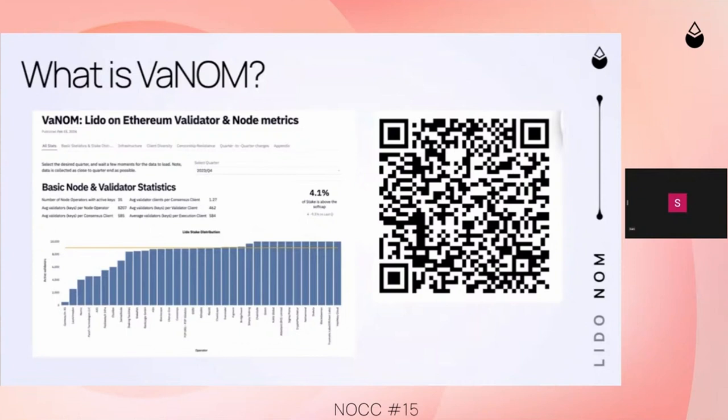The main data set — the input for this dashboard — comes from self-reported data from node operators in the curated set. They report on a quarterly basis and we ping them every quarter to make sure the data is accurate, complete, and up to date. The report comes out usually about four to five weeks after the quarter ends, because there's a lot of manual processing involved and a lot of node operators who have to submit data.